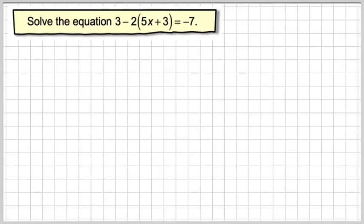Now we come to the more difficult one of solving equations with brackets in. So solve the equation 3 minus 2 times 5x plus 3 equals minus 7. This is different because the bracket is sort of in the middle of the equation.